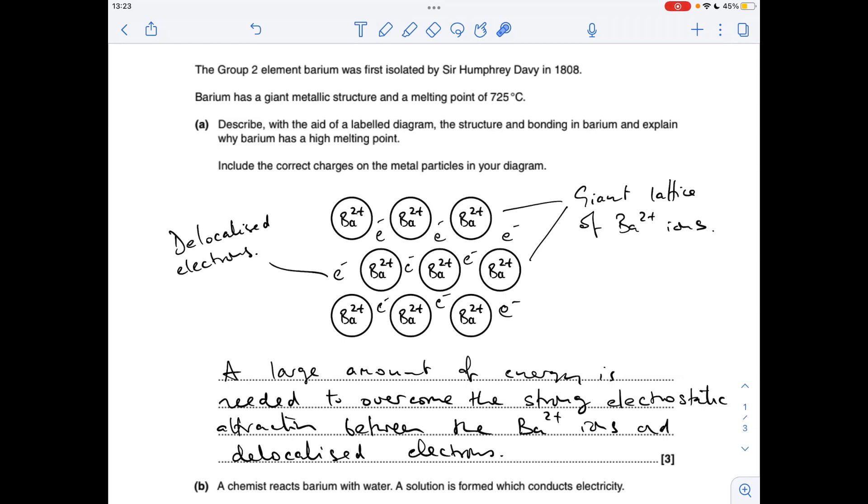So why has it got a high melting point? That's because a large amount of energy is needed to overcome the strong electrostatic attraction between the Ba2+ ions and the delocalized electrons.